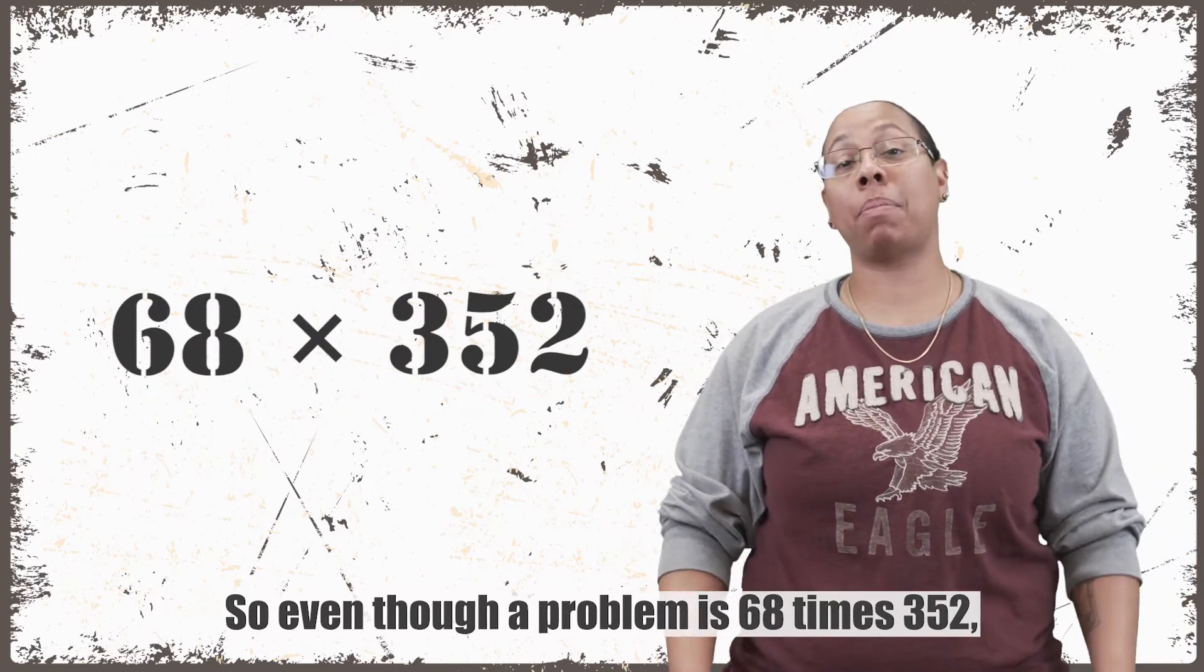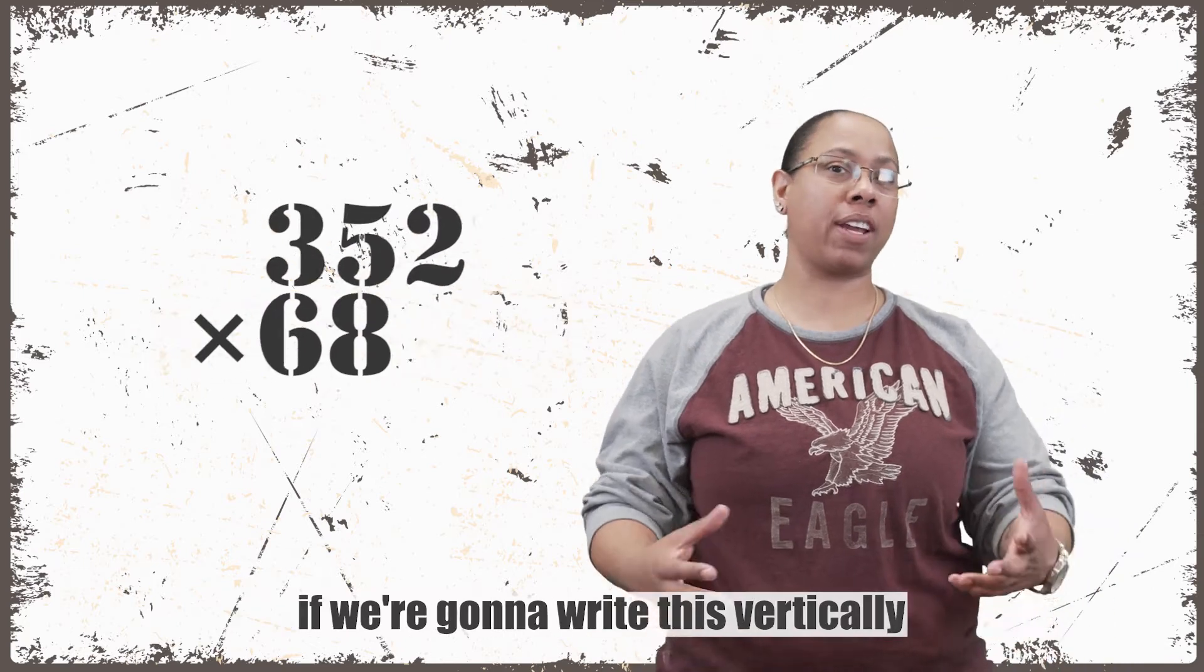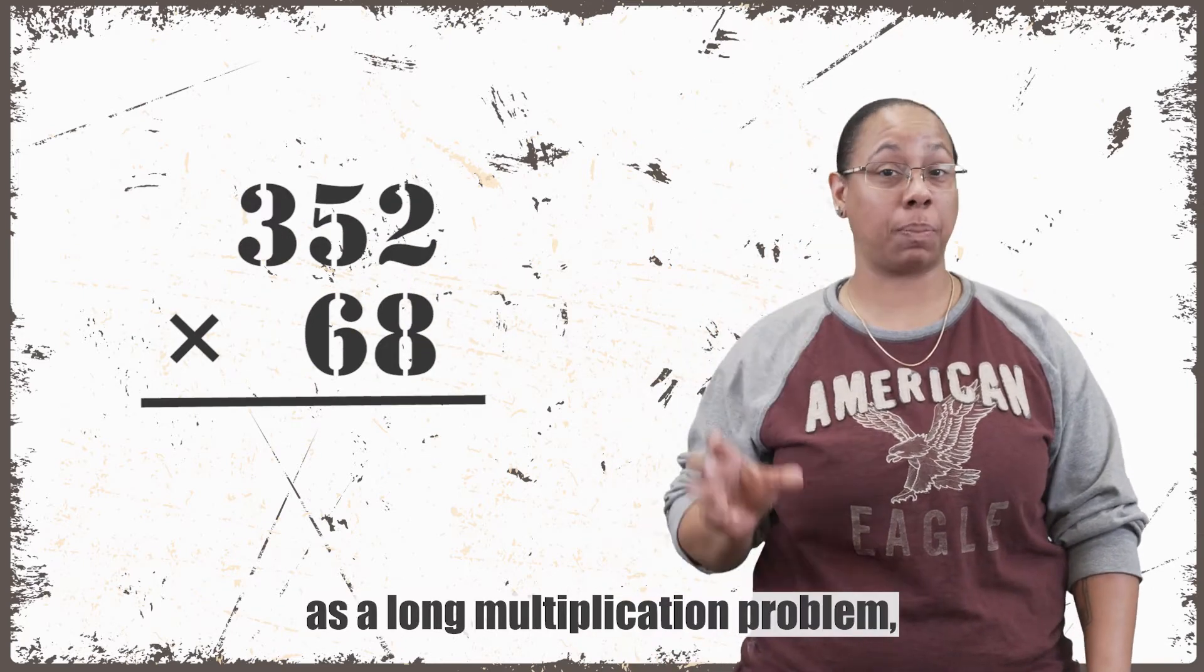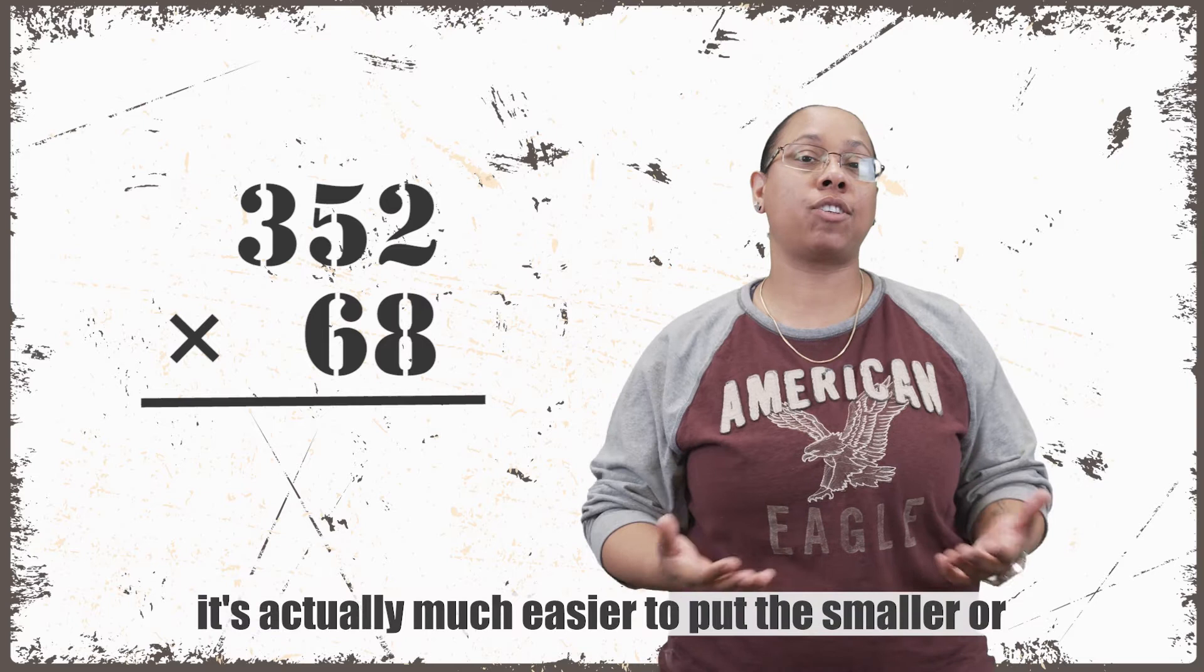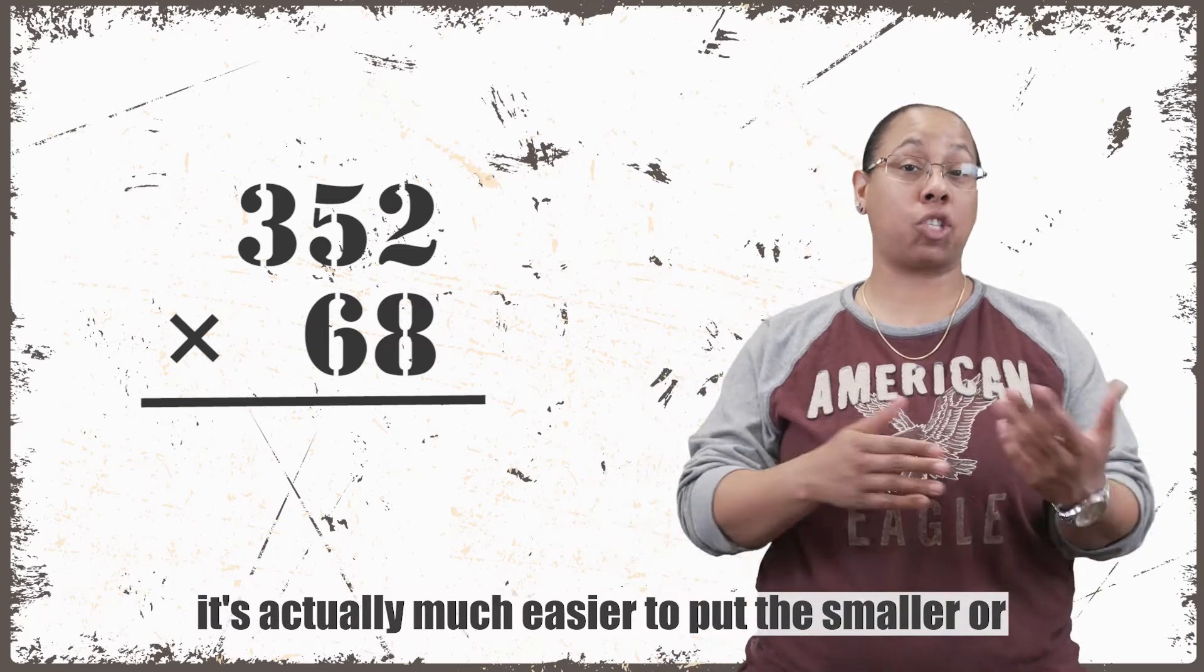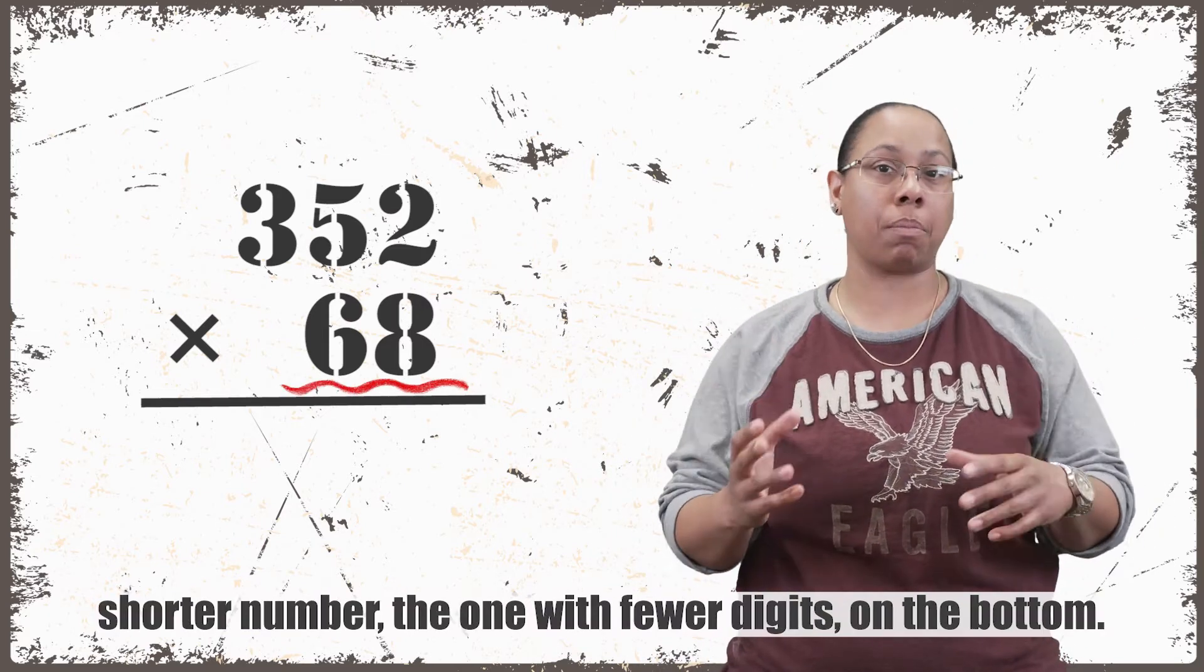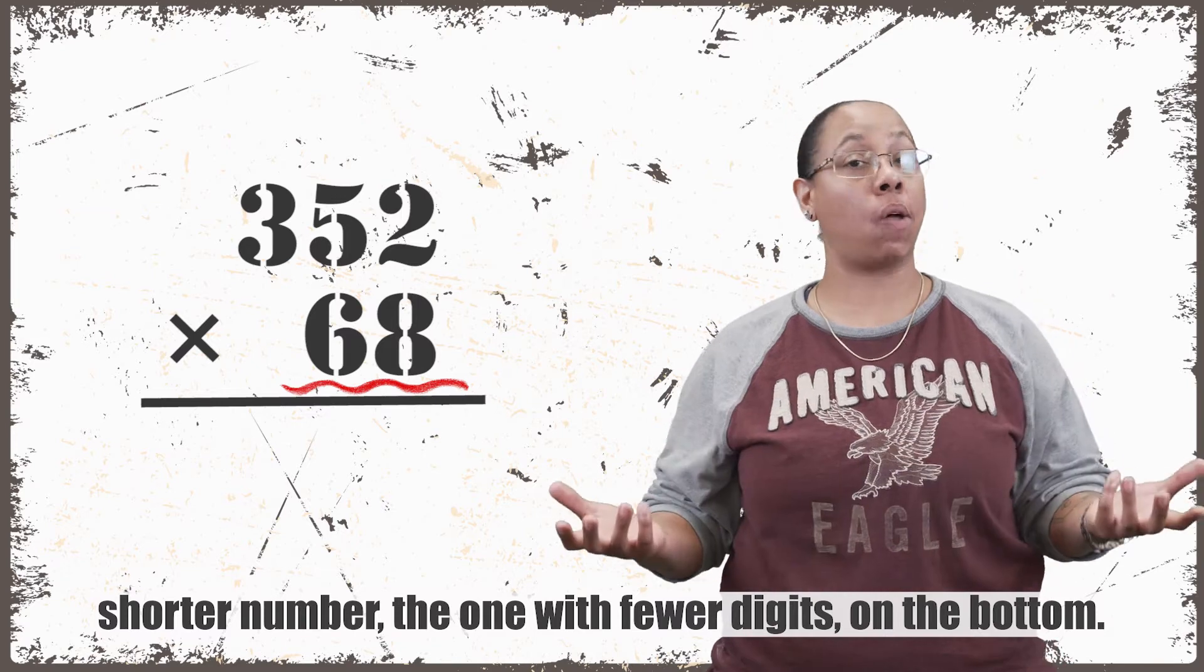So even though our problem is 68 times 352, if we're going to write this vertically as a long multiplication problem, it's actually much easier to put the smaller or shorter number, the one with fewer digits, on the bottom.